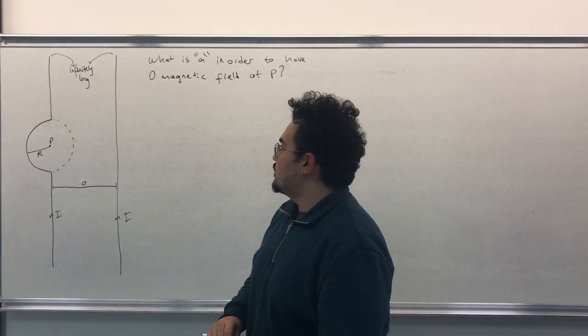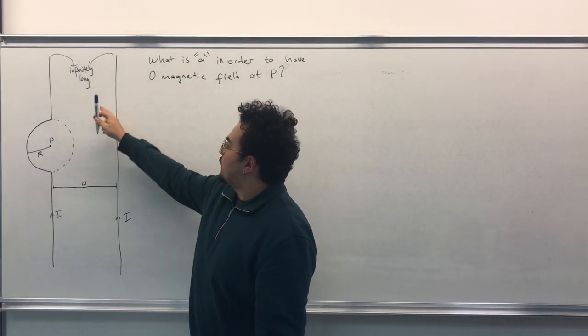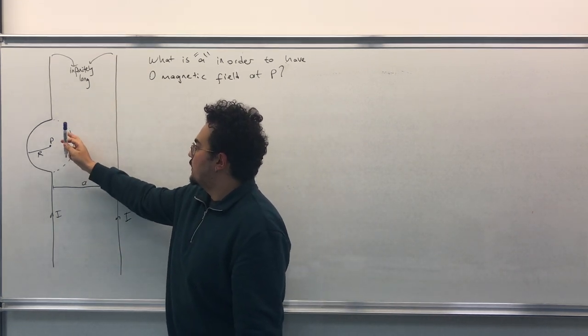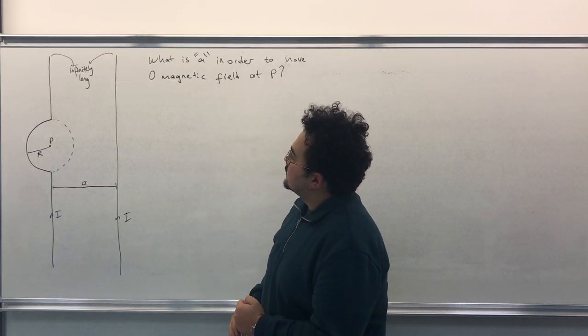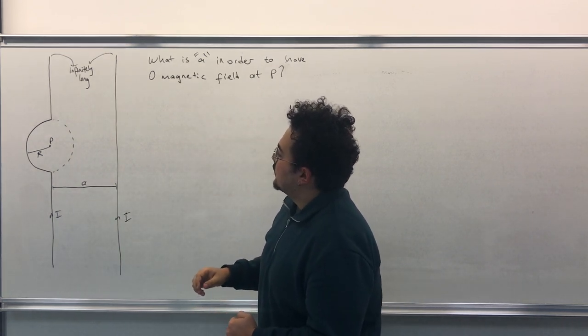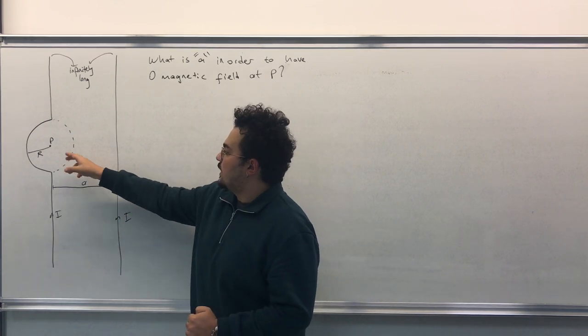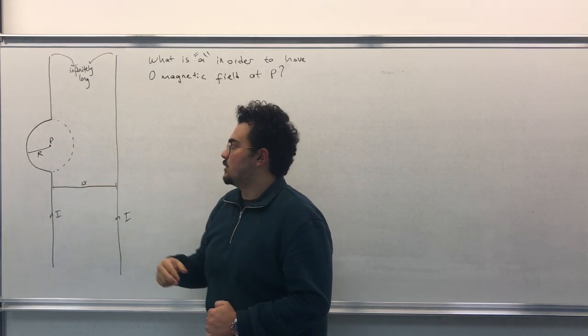In this question we have two infinitely long wires. One is a straight wire and the other has a little semisphere here. The question asks what is A if we want to make the magnetic field at P zero.